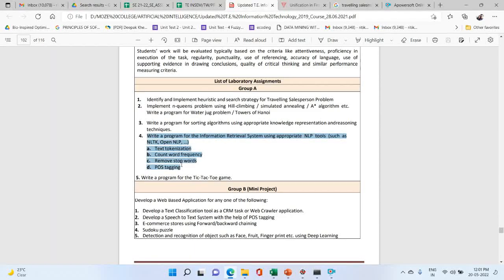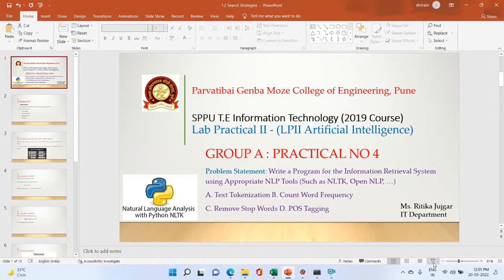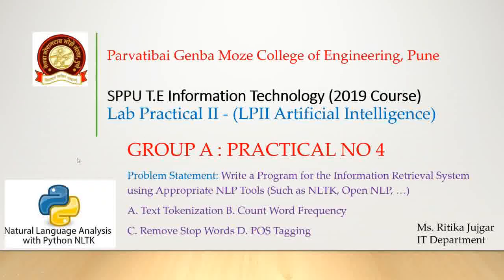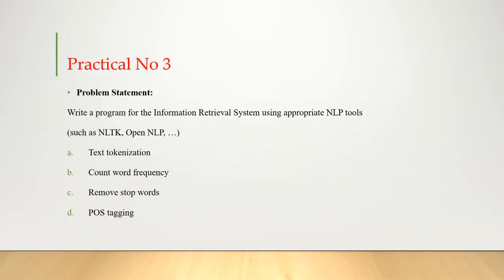In this video we are going to discuss about the fourth lab assignment. The LP2 artificial intelligence group A assignment, practical number 4. The problem statement is: write a program for the implementation of an information retrieval system using an appropriate NLP tool such as NLTK or OpenNLP, where we perform text tokenization, count word frequency, remove stop words, and POS tagging.